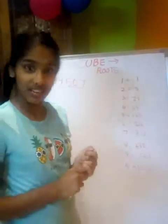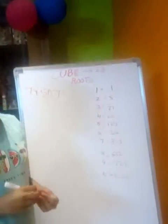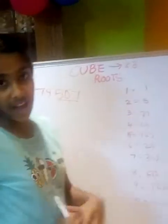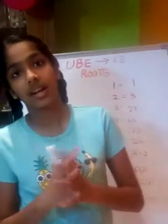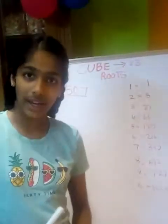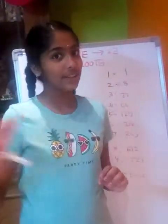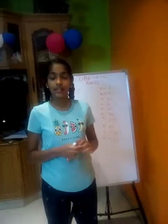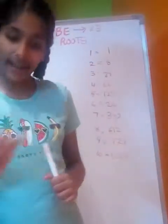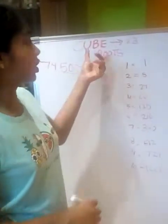Cubes are nothing but a number multiplied into 3. What is 'into 3'? If there is a number 7, we need to multiply 7 three times. That means we do not do 7 into 3. We need to do 7 into 7, which is 49, and again into 7 — the same number repeated 3 times. That is called cubing, and the answer we get is called the cube.